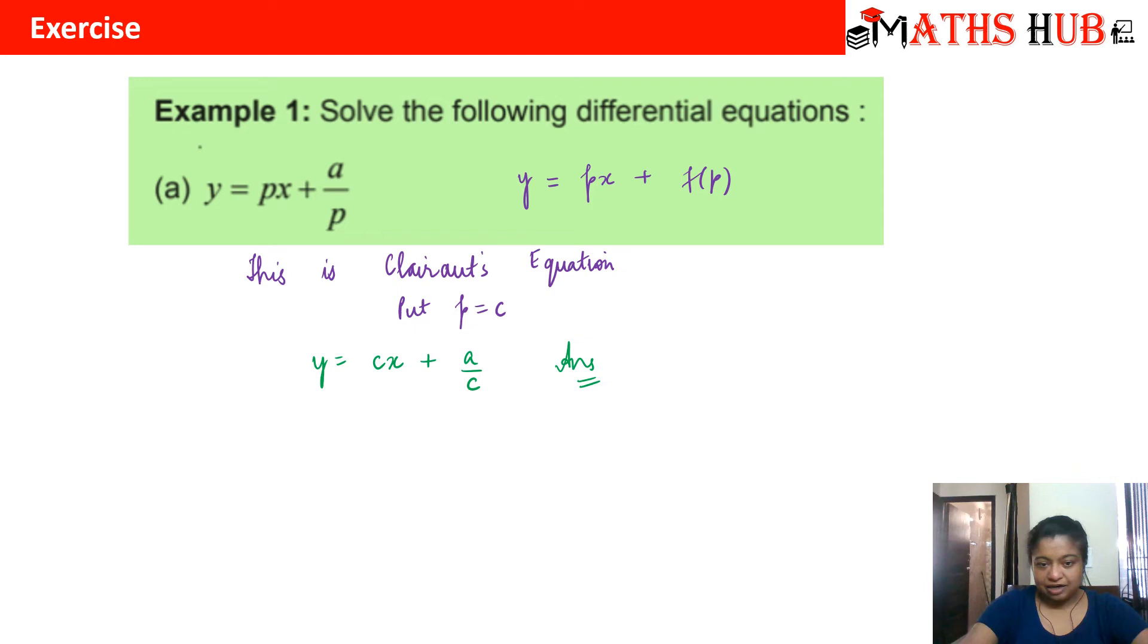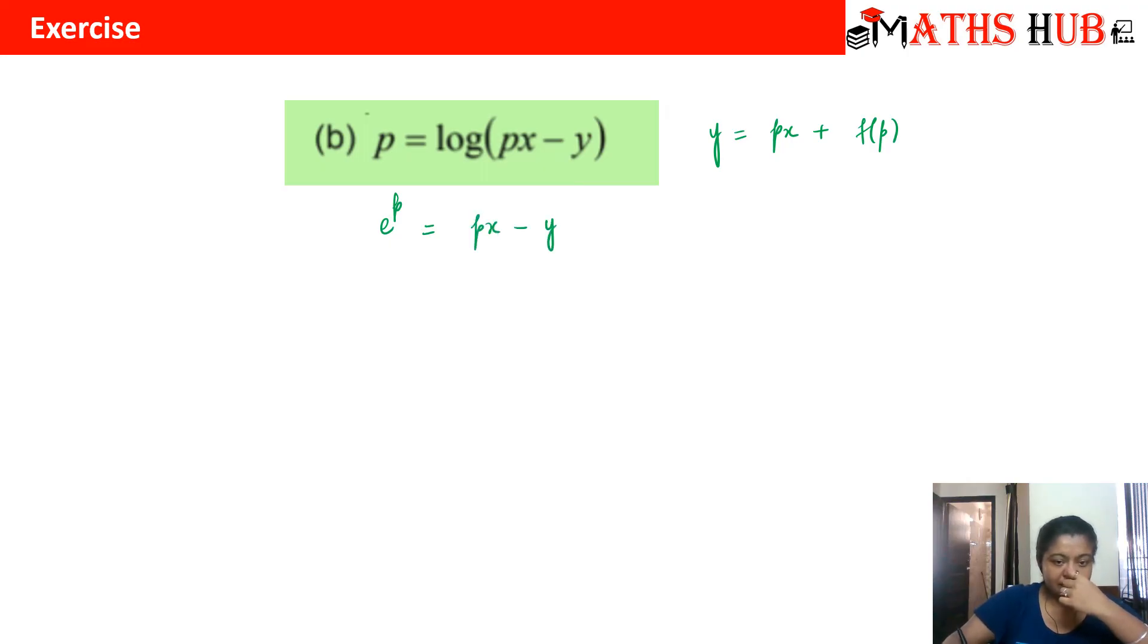Let us try to understand one more question. We have P is equal to log of Px minus Y. The standard Clairaut's equation is Y is equal to P of X plus F of P. Can we convert the given differential equation in the standard form? Take exponential on both sides. We will get E raised to the power P is equal to Px minus Y. Bring Y on the left side and bring E to the power P on the right hand side. We will get Y is equal to Px minus E raised to power P. Now it is in the form of the Clairaut's equation.